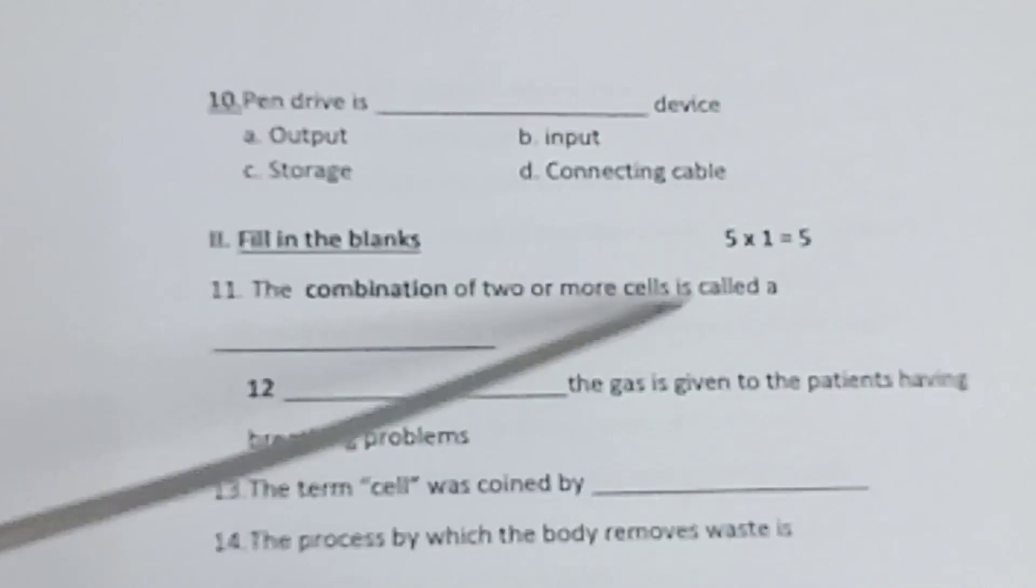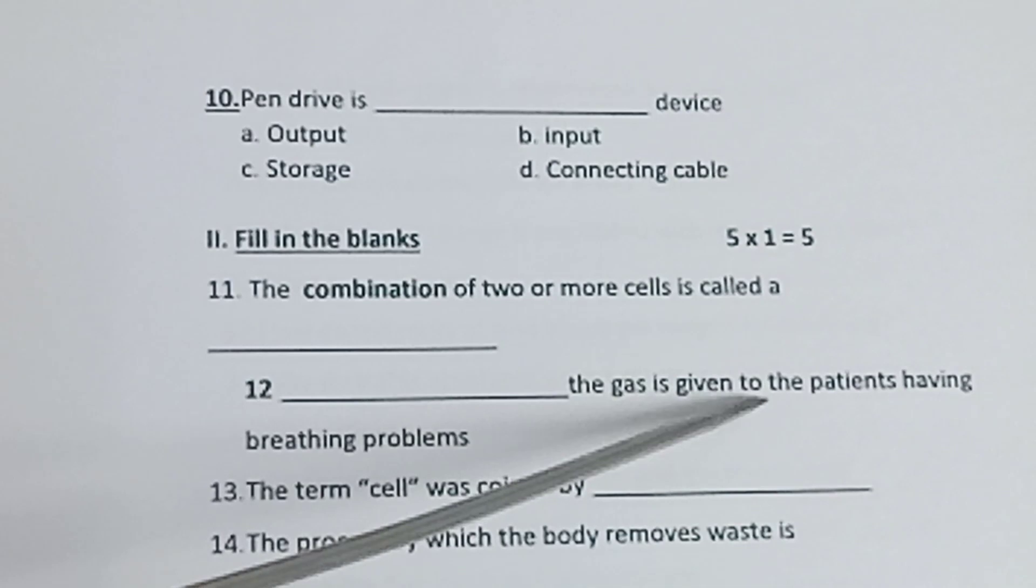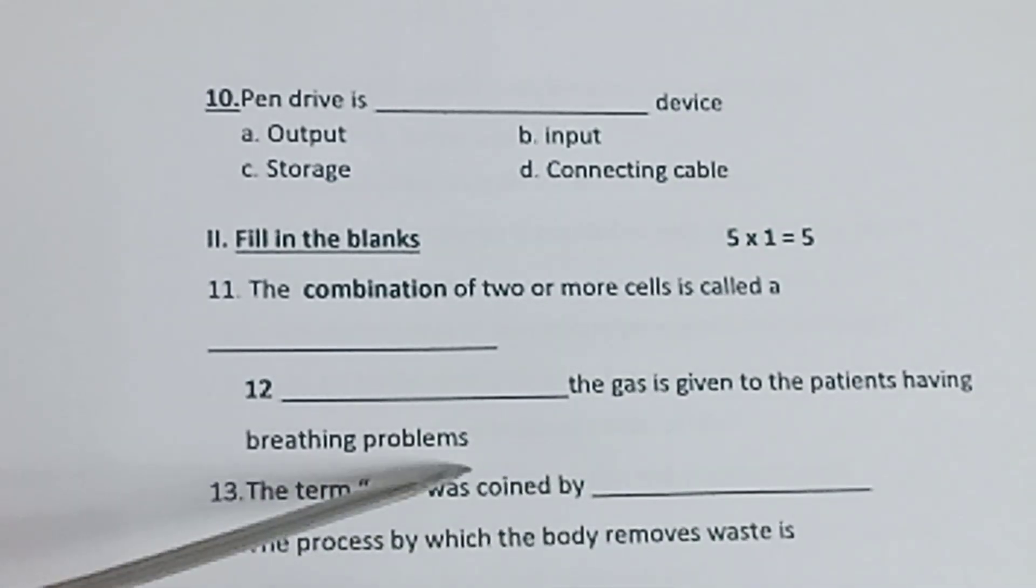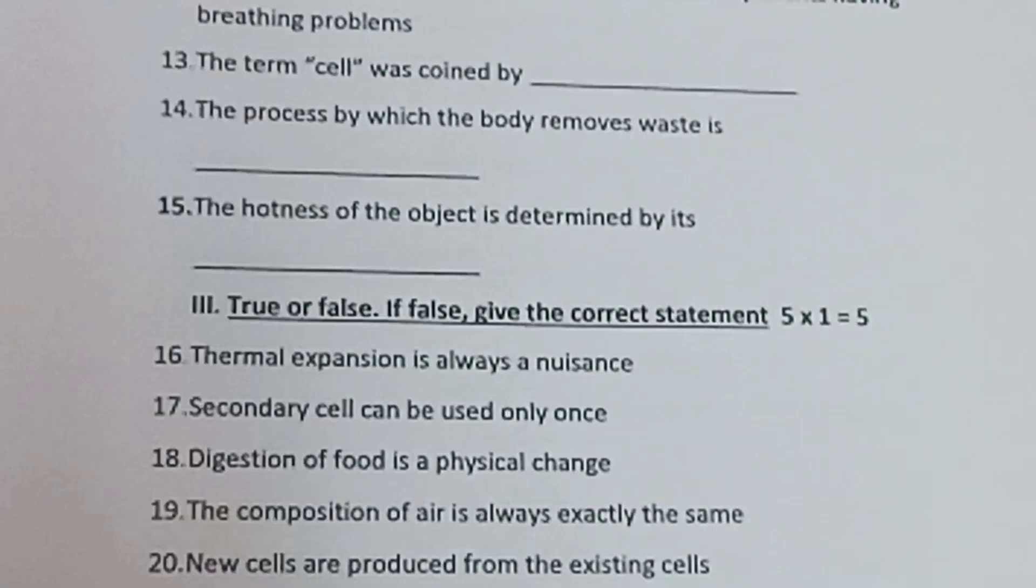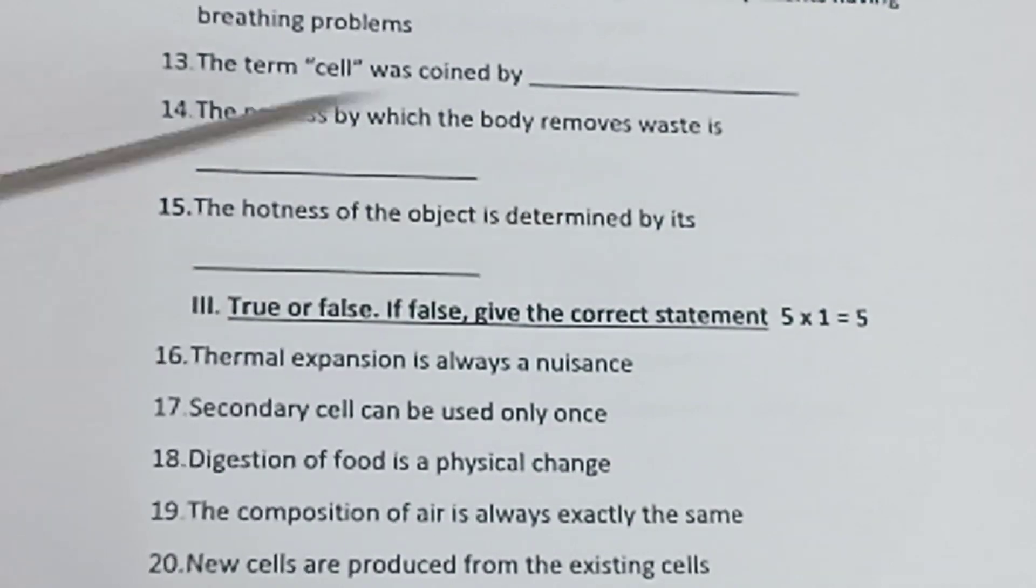Question 11: The combination of two or more cells is called ___. Question 12: ___ the gas is given to the patients having breathing problems. Question 13: The term cell was coined by ___. Question 14: The process by which the body removes waste is ___. Question 15: The hardness of the object is determined by its ___.